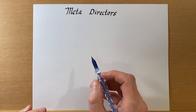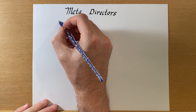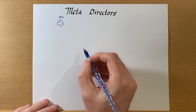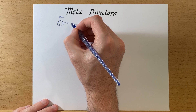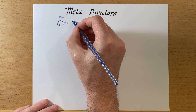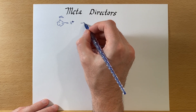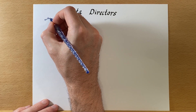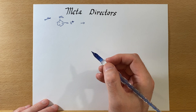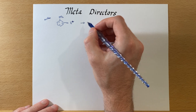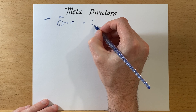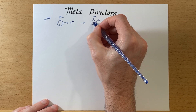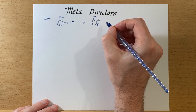Now let's talk about meta directors, and one of the best ones is a nitro group. So let's start off with nitrobenzene. If we have this and we have it attack an electrophile with a plus charge, let's see what happens if we put this in the ortho position, and we'll do meta and para, and then we'll see why the meta position is best in the case of meta directors.